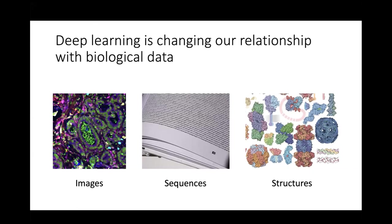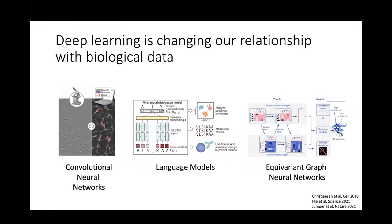The way I like to think about this intersection is in terms of the different types of data collected about living systems. Broadly, there are three types: imaging data, which contains information about the spatial and temporal variation of living matter; sequence data, which contains information about the parts list — which genes are present, DNA sequencing, RNA sequencing; and structural data, which contains information about how biological molecules interact with the physical world to give rise to biological form and function.